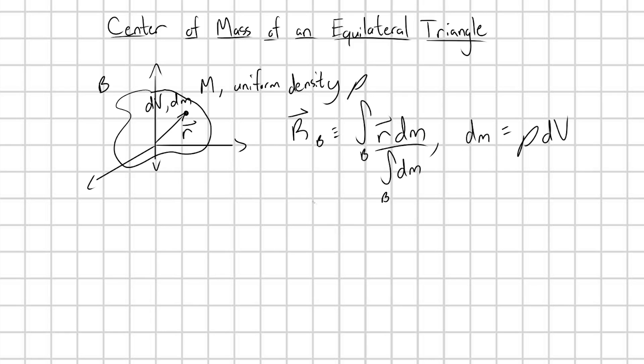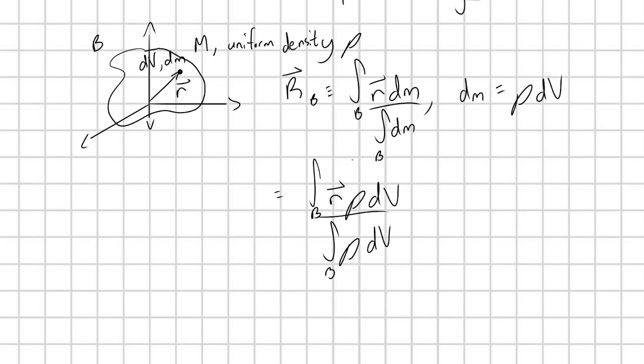Let's go ahead and just substitute that into our equation. So we have integral over my blob of r times ρ dV divided by integral of ρ dV over my blob, but ρ is just a constant, so we could pull both of these ρs out of the integrals, or in other words, we could just cancel both of these guys out.